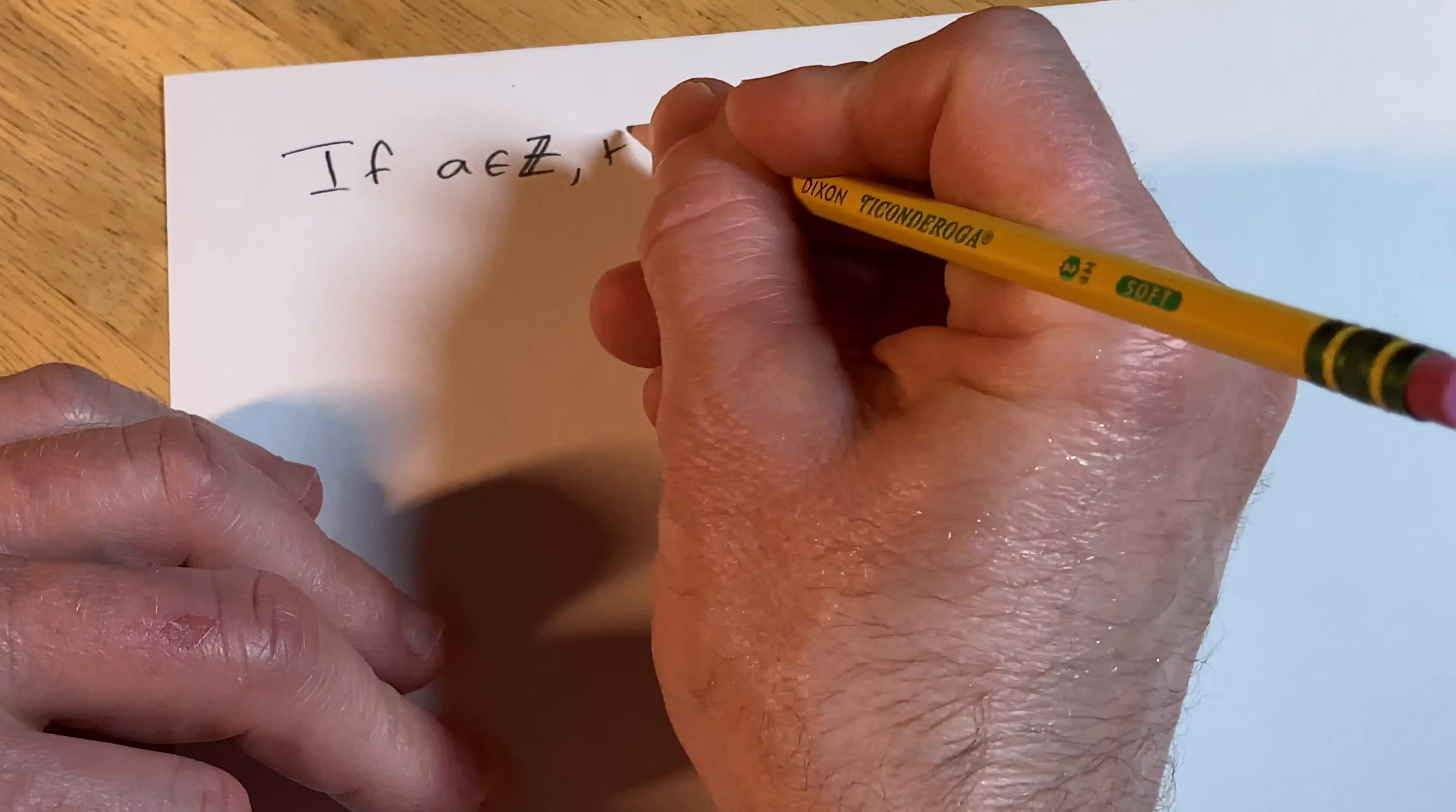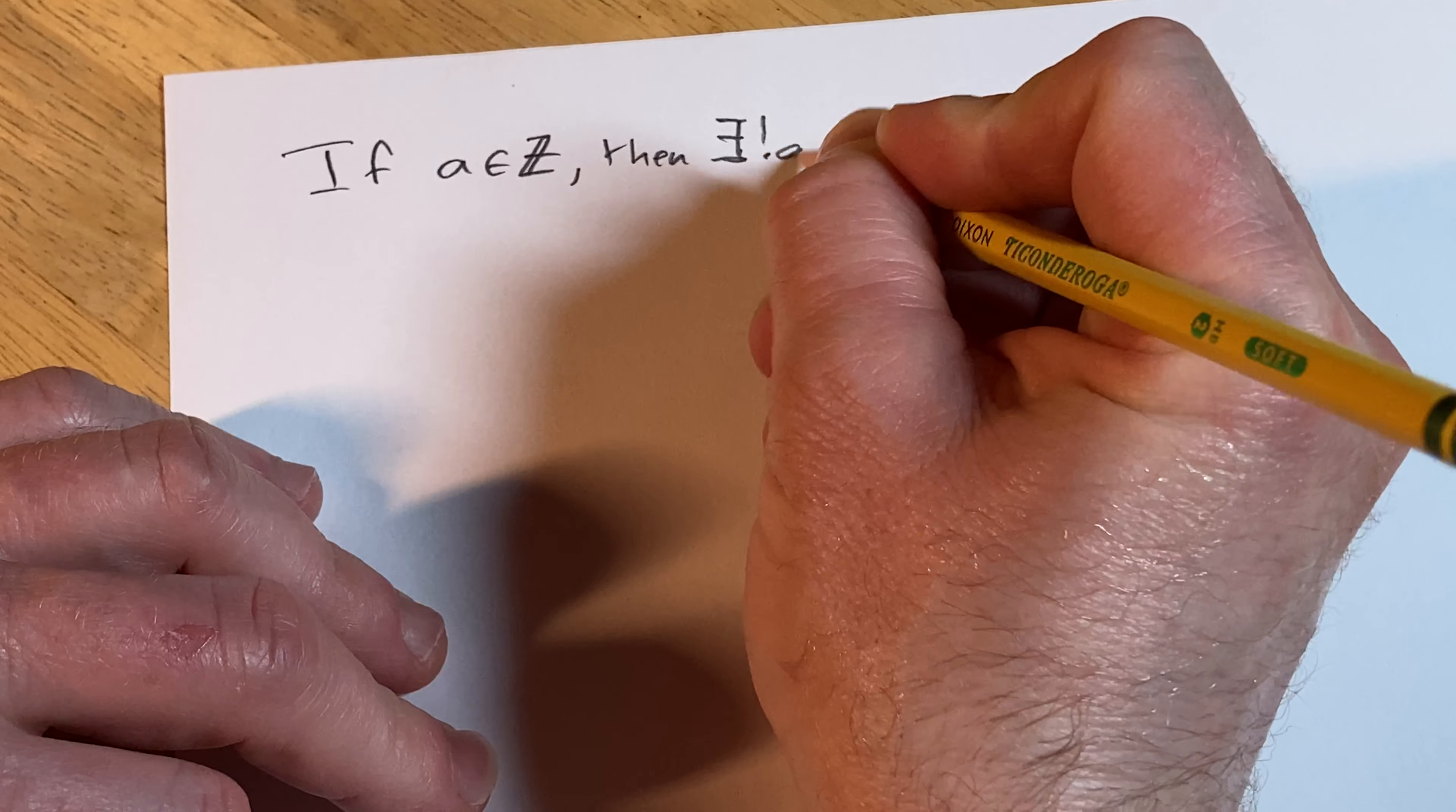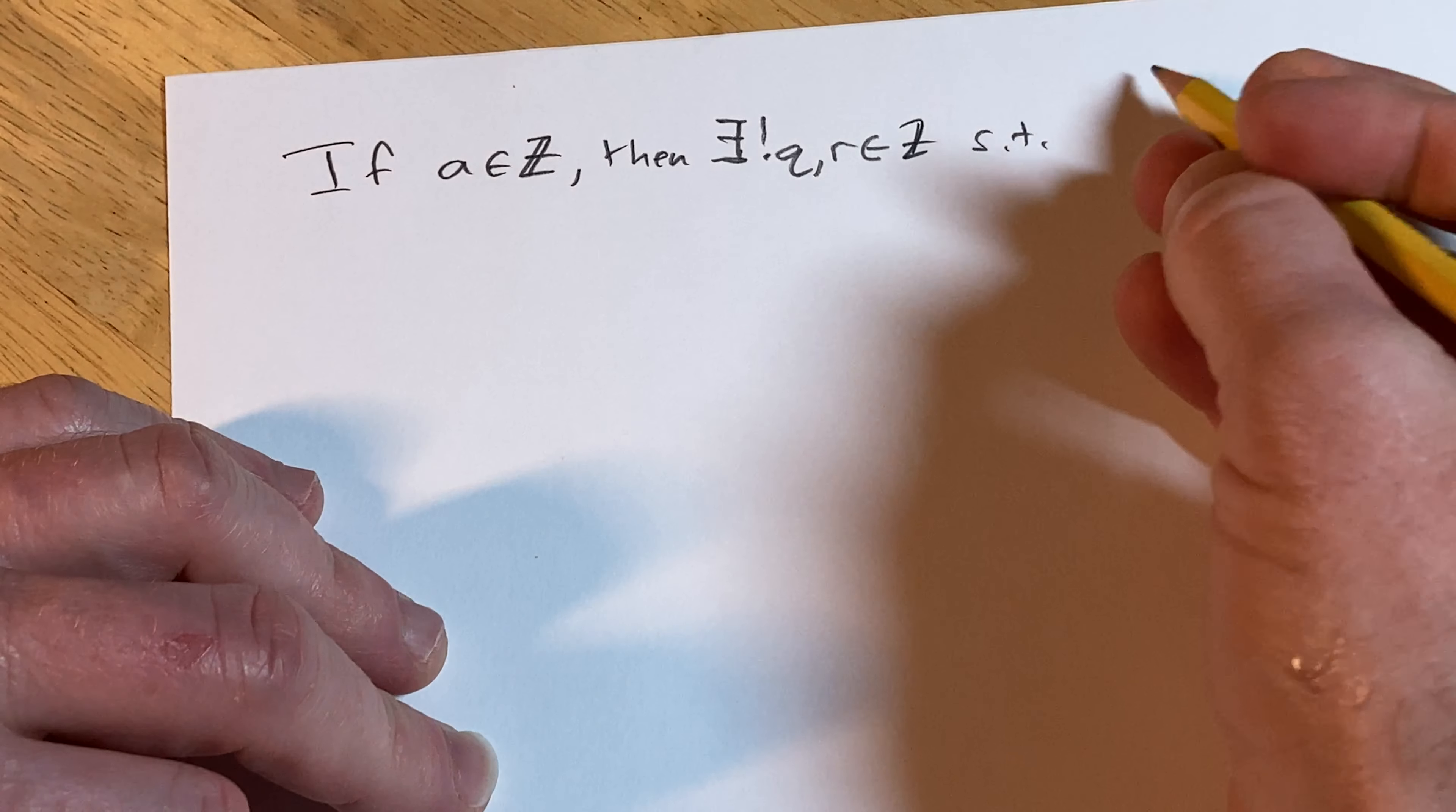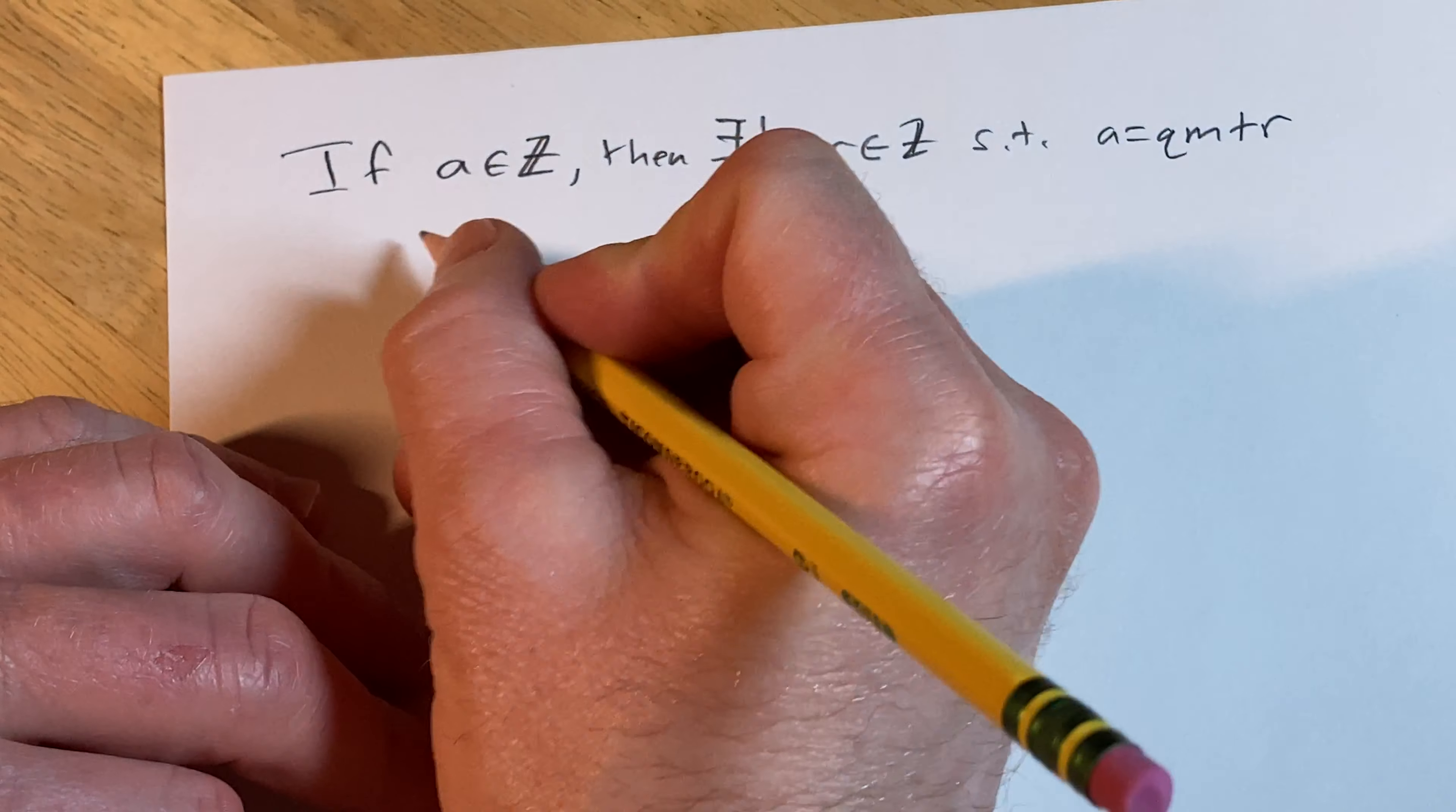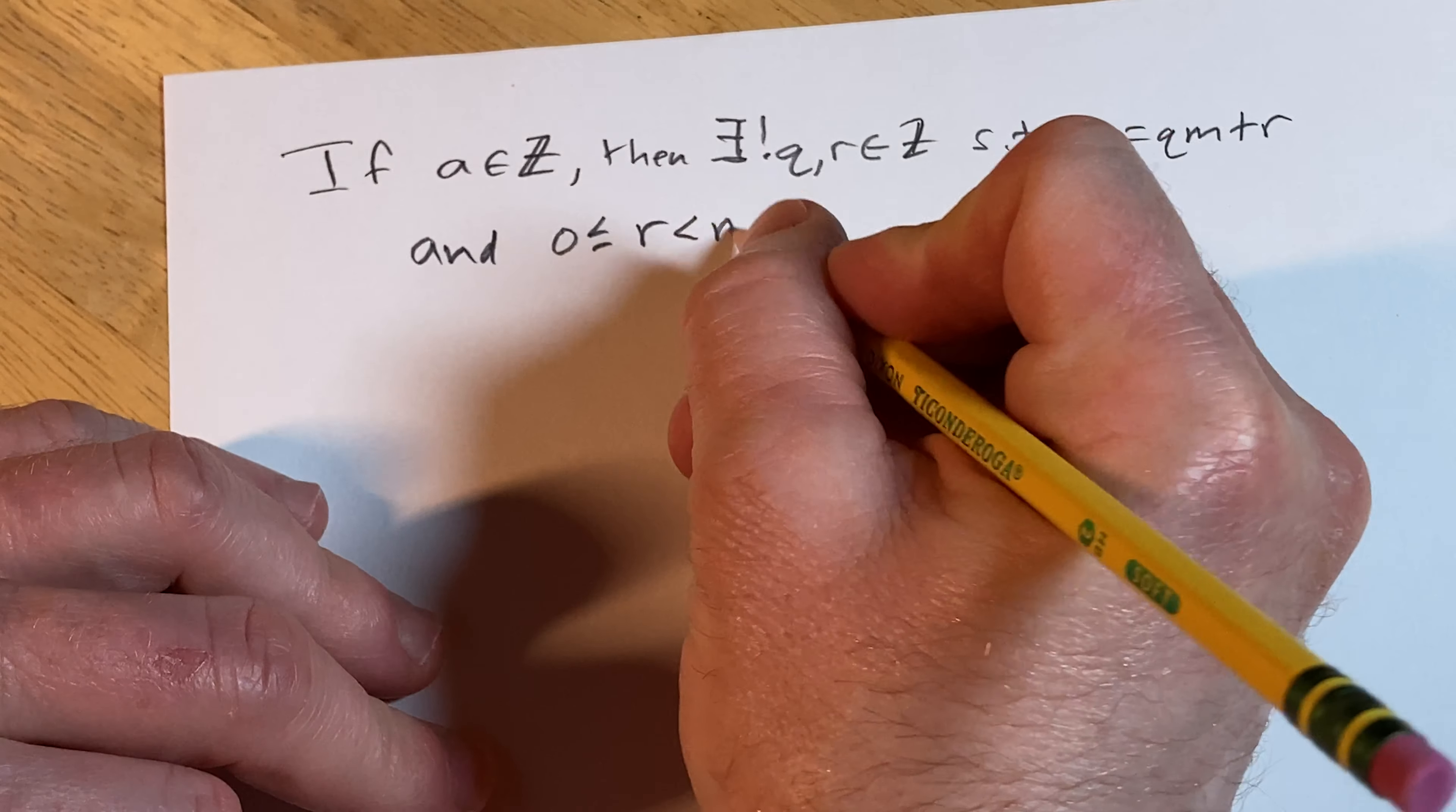then there exists unique Q and R, also integers, such that A equals QM plus R, and R is between 0 and M.